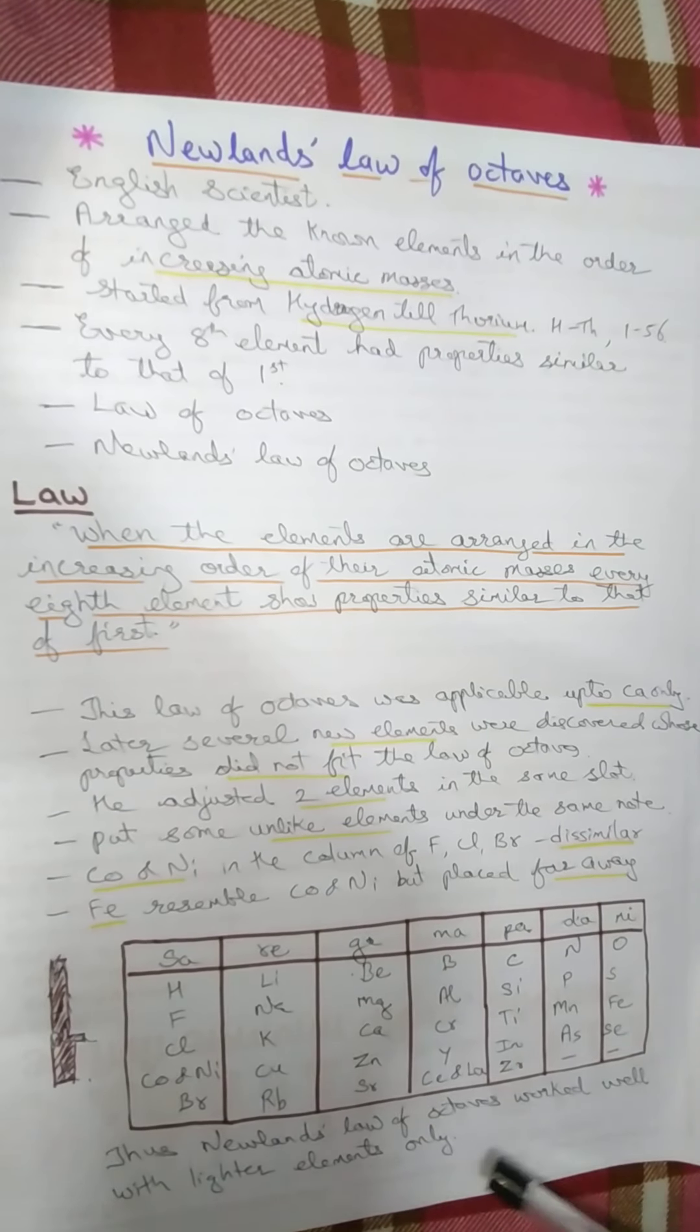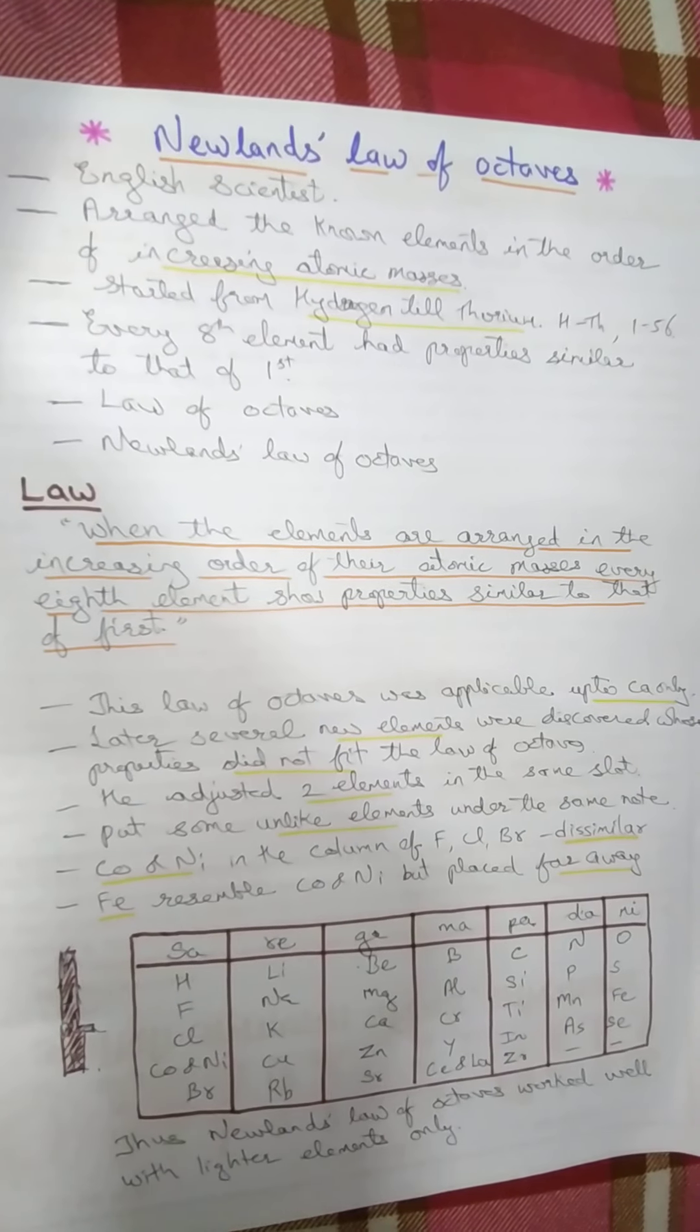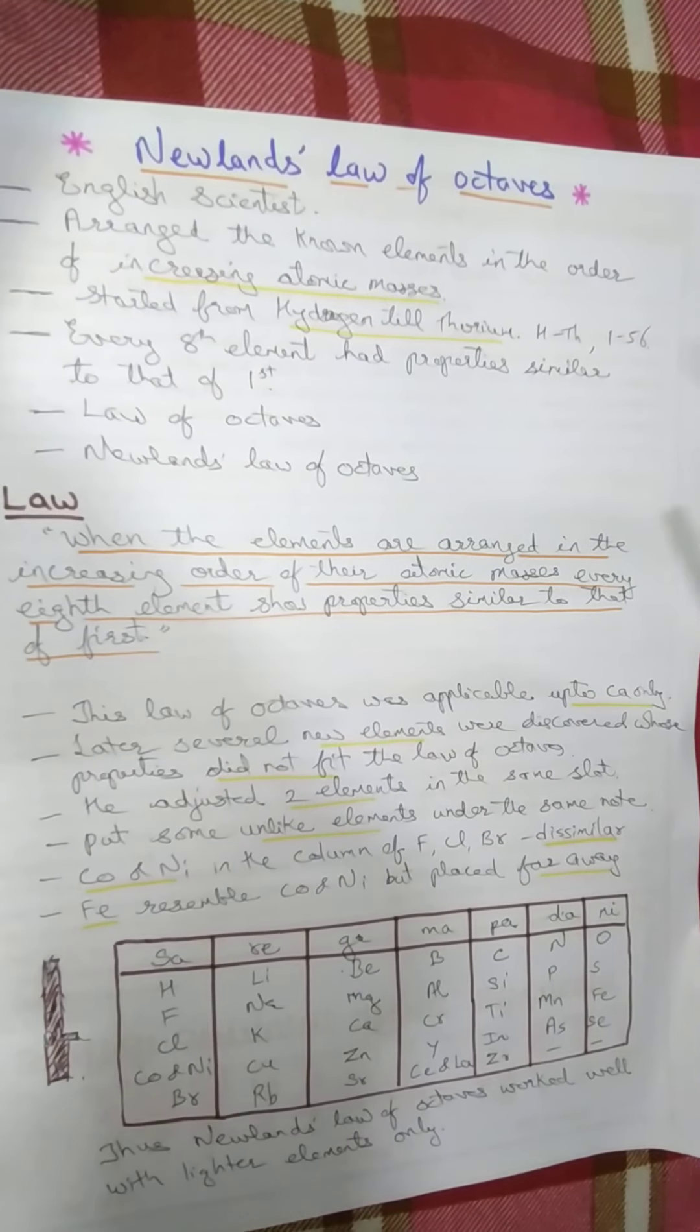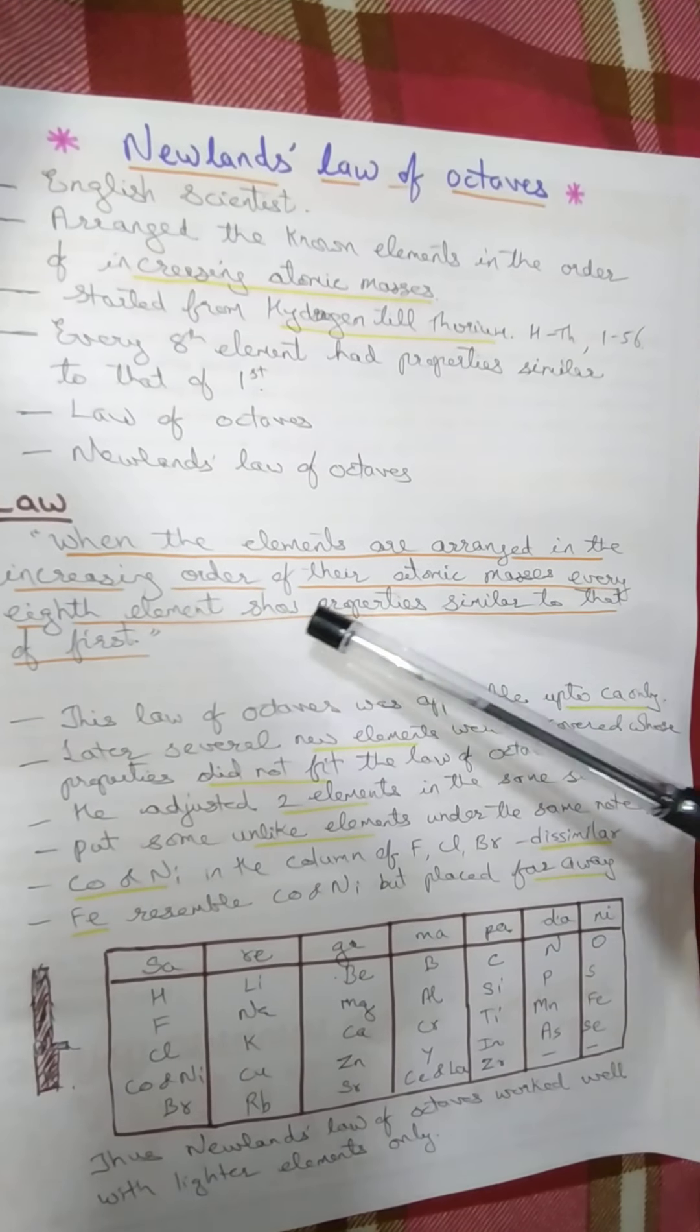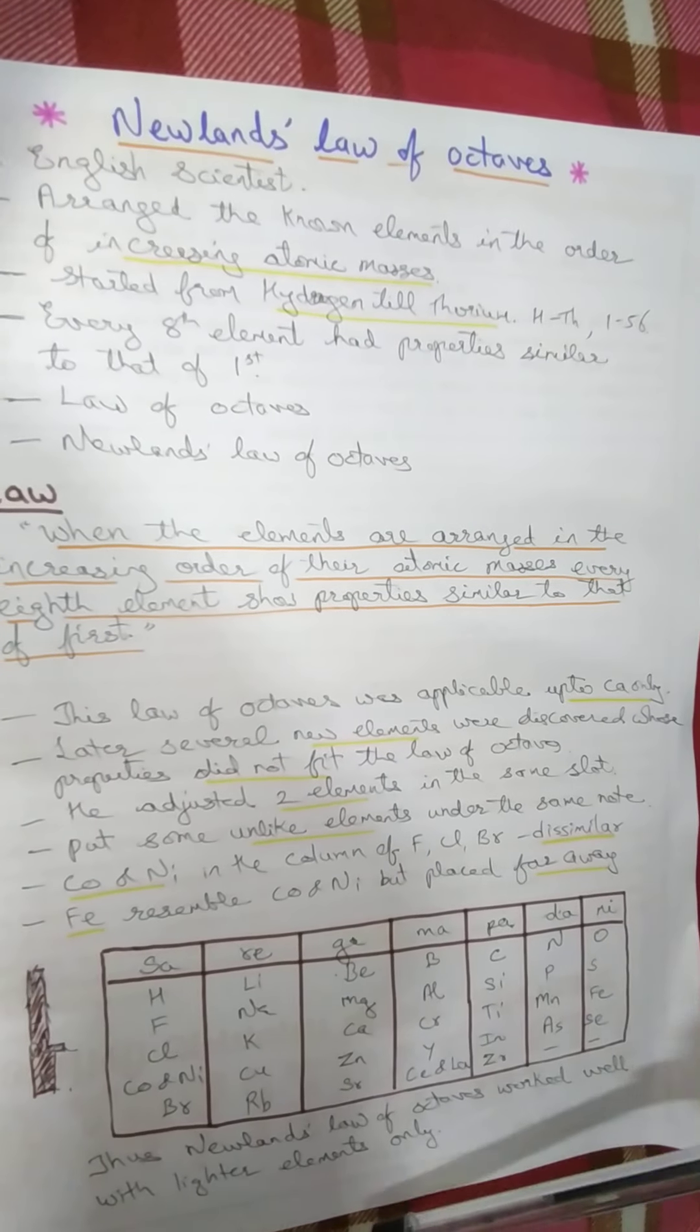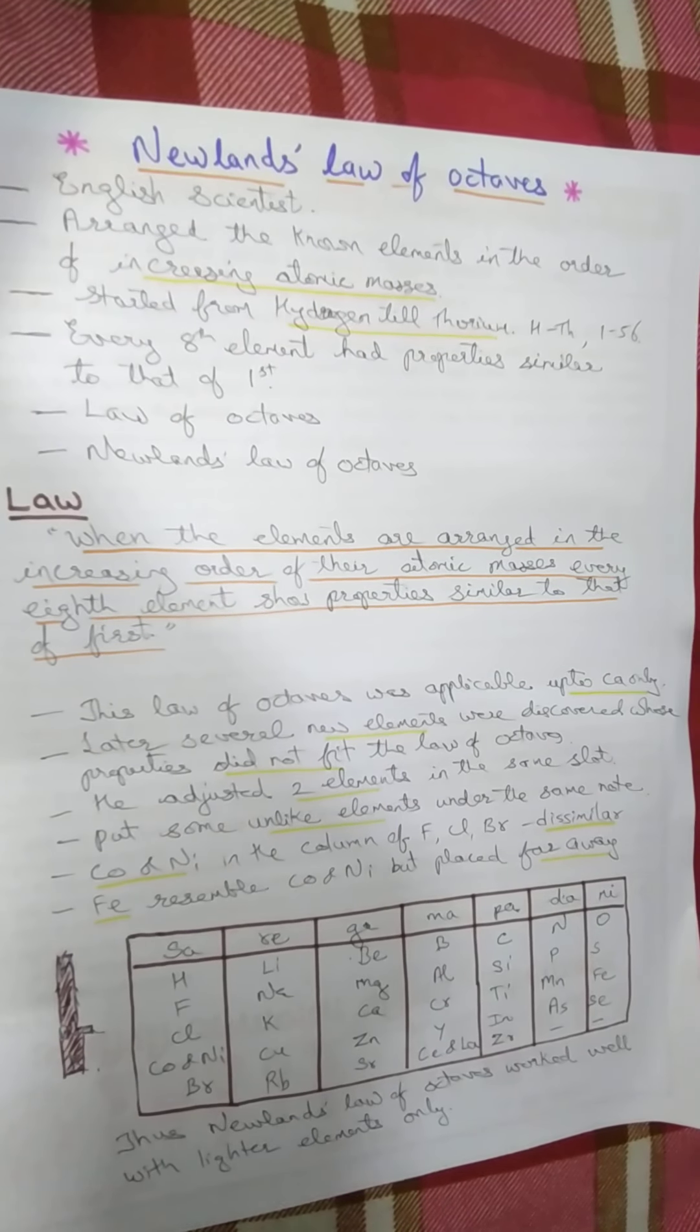And hence, Newland's law of octaves worked well only for lighter elements, that is, the elements having less atomic mass. For higher atomic mass, the Newland's law was not applicable. Hence, his study got failed. But still, he has done some work. He has given the law and this law is the pioneer work. After Newland, as it got failed, next comes the scientist Mendeleev, and that we are going to study in the next session.